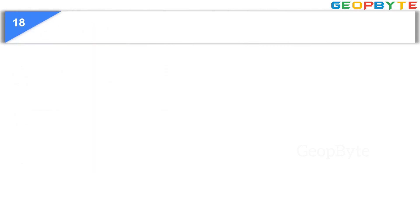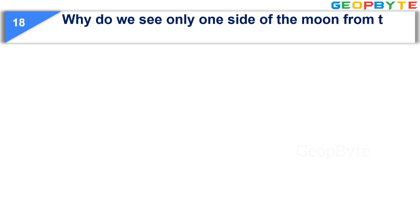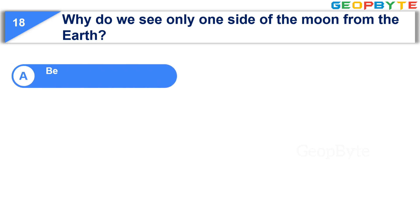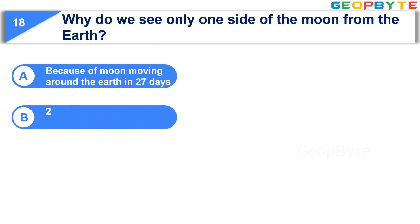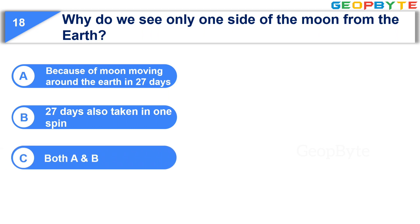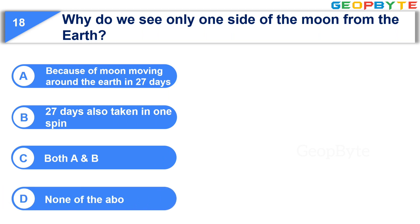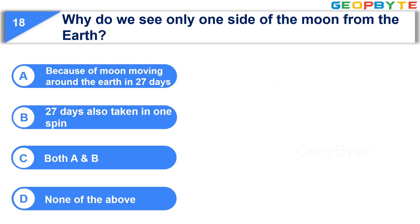Moving to the 18th question. Option A: Because of the moon moving around the earth in 27 days. Option B: 27 days also taken in one spin. Option C: Both A and B. Option D: None of the above. Your time starts now. Your time is up and the correct answer is Option C: Both A and B — because of the moon moving around the earth in 27 days, and 27 days also taken in one spin.